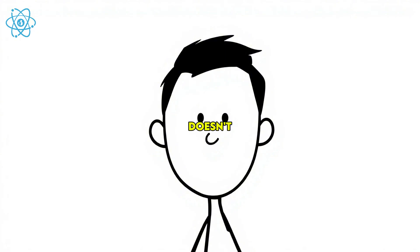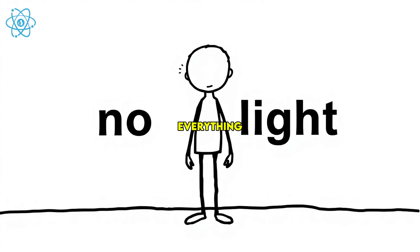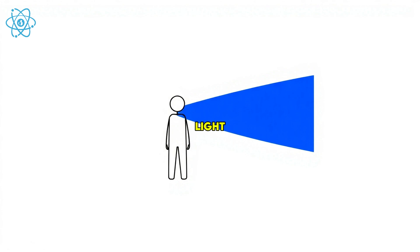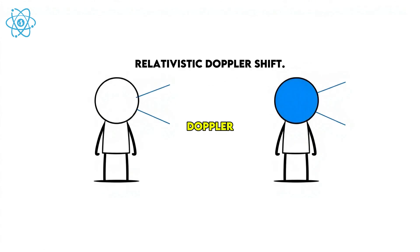Because at light speed, light doesn't hit your eyes the way it usually does. It bunches up in front of you. Everything behind you? Darkness. Everything ahead of you? Blinding blue light. This is called relativistic doppler shift.